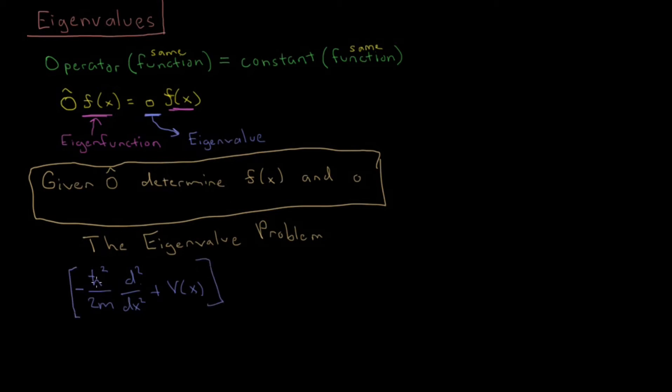So, we can have this minus h-bar squared, Planck's constant, divided by two times the mass, second derivative with respect to x, plus the potential energy acting on a particle. Now, all of this times the wave function, psi of x,